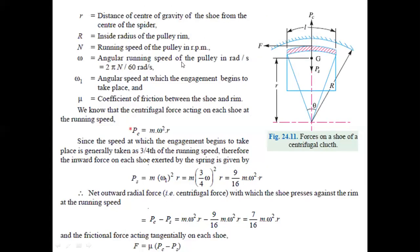Omega is the angular running speed of the pulley in radians per second. There is also an engagement speed omega for engagement with the driving or driven shaft. The centrifugal force formula is Pc equals m times omega squared times r, where m is mass, omega is angular speed, and r is radius. We also have the inward spring force Ps, which is the force at which engagement begins. The net outward radial force is the difference of the two.